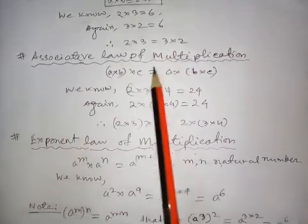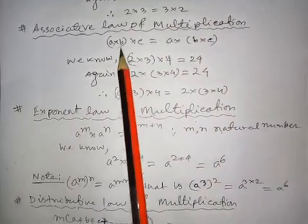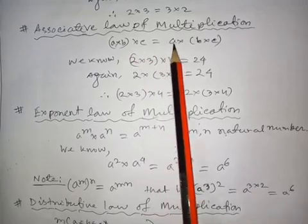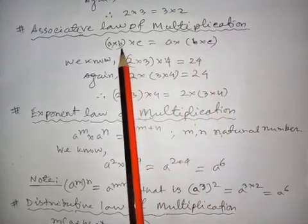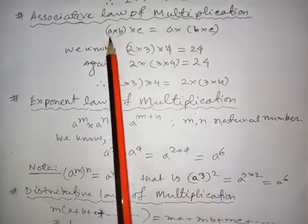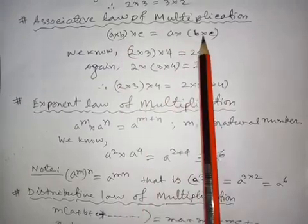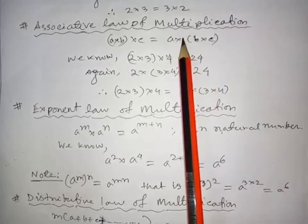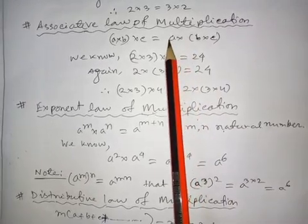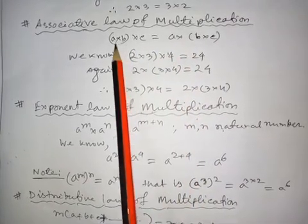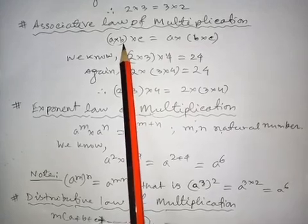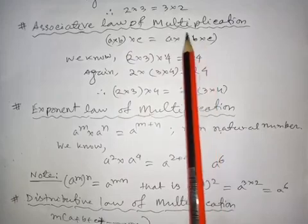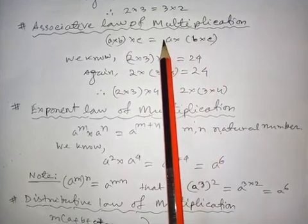Next is the Associative Law of Multiplication. What is the associative law of multiplication? A multiplied by B multiplied by C equals A multiplied by B, then multiplied by C. For this law, we can multiply this part first or we can multiply this part first. The product will always be the same regardless of which grouping we compute first.